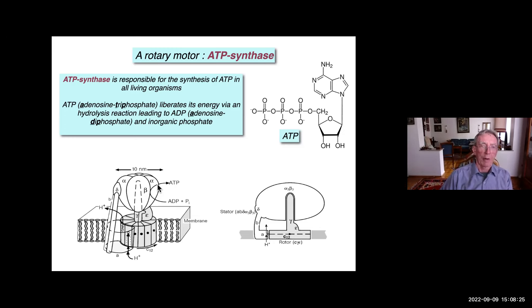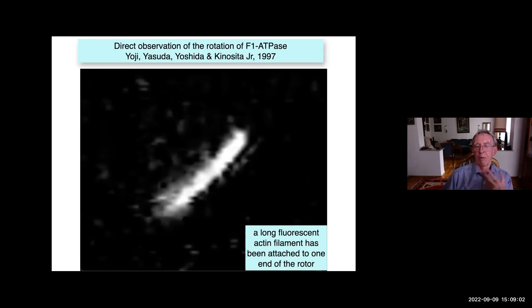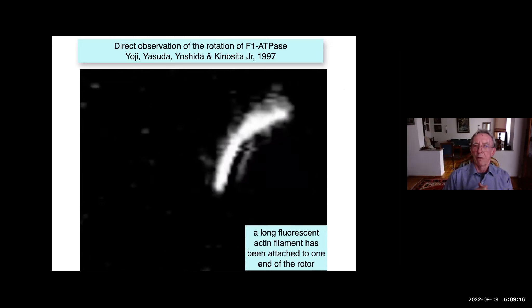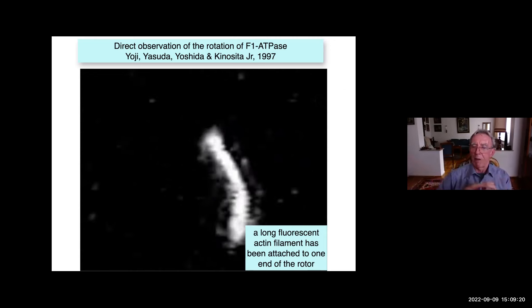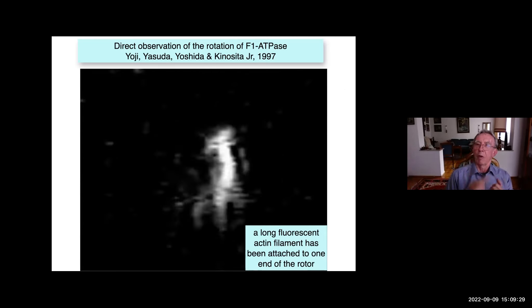This part is fixed and this part is rotating — you can see some kind of axis or shaft that spins rapidly. It was very difficult to demonstrate this, but some people did beautiful work: they attached a very long filament at the end of the rotor, and this filament — fluorescent actin — they could observe and visualize, clearly showing that the system undergoes a rotary motion. This was an experimental piece of work published about 25 years ago by a Japanese group.